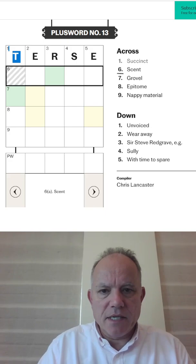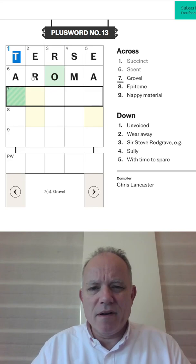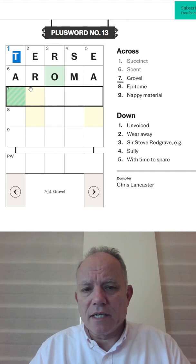Scent must be aroma, could have been odour, actually it could be odour. Grovel is kneel maybe, no let's look at one down, tacit for unvoiced.